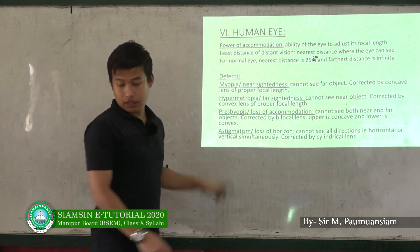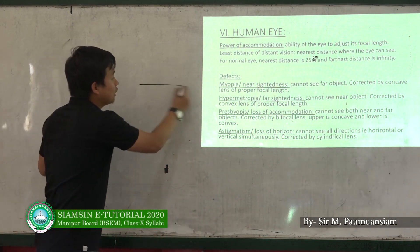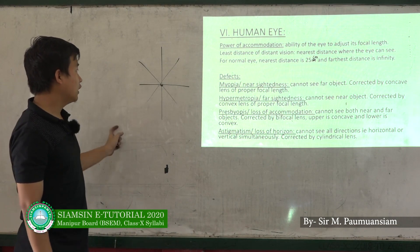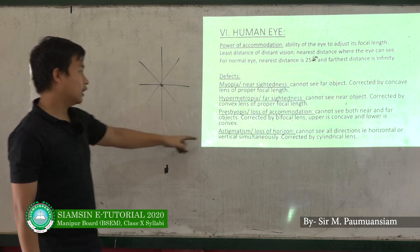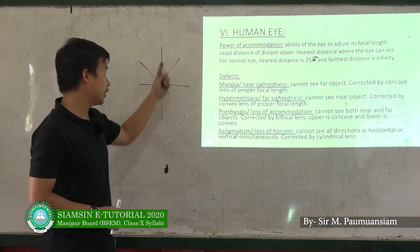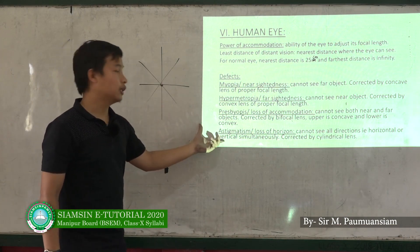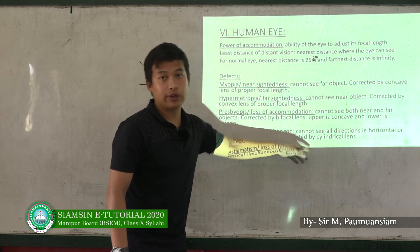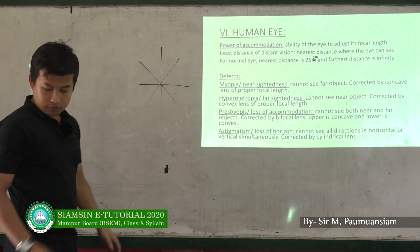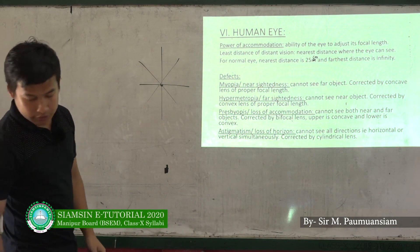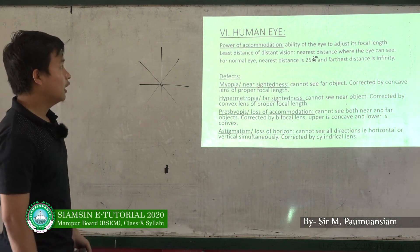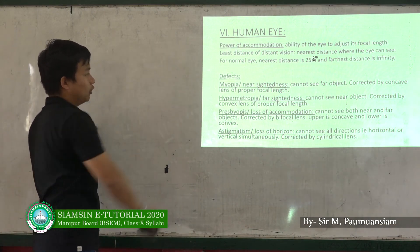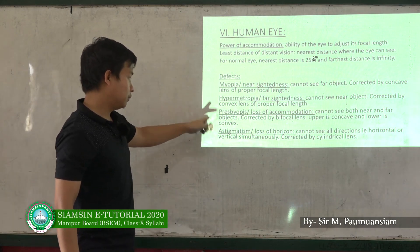Astigmatism is another defect where horizontal and vertical lines cannot be focused simultaneously. It is corrected using a cylindrical lens. To summarize: the nearest vision is 25 cm, farthest is infinity. The four defects of the eye are Myopia, Hypermetropia, Presbyopia, and Astigmatism.